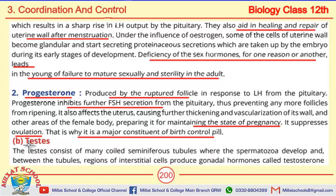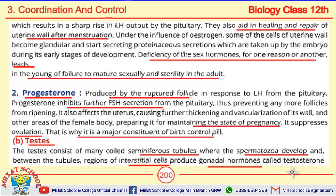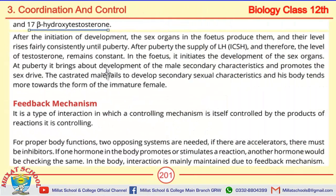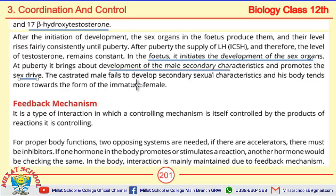Next are the testes. The testes have interstitial cells between the tubules which produce gonadal hormones. The hormone is called testosterone, also known as 17-beta-hydroxy testosterone. In the fetus, testosterone initiates the development of sex organs. At puberty, it brings about development of male secondary characteristics and promotes sex drive. These are the functions of testosterone.